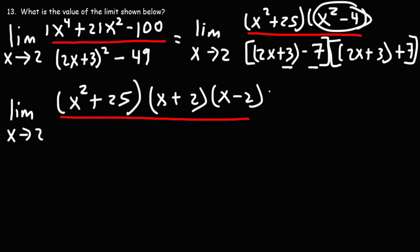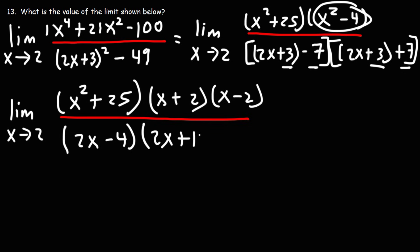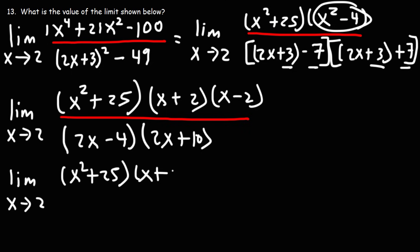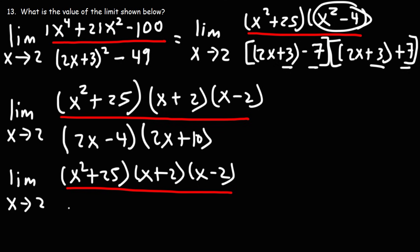Now, for the first factor, notice that we can combine 3 and negative 7: 3 minus 7 is negative 4. So we're going to get 2x minus 4. For the second factor, we can combine 3 and positive 7: 3 plus 7 is 10, so we'll have 2x plus 10. From 2x minus 4 we can factor out the GCF, which is 2, and we'll get x minus 2. For 2x plus 10, we can also factor out 2, and we'll be left with x plus 5.